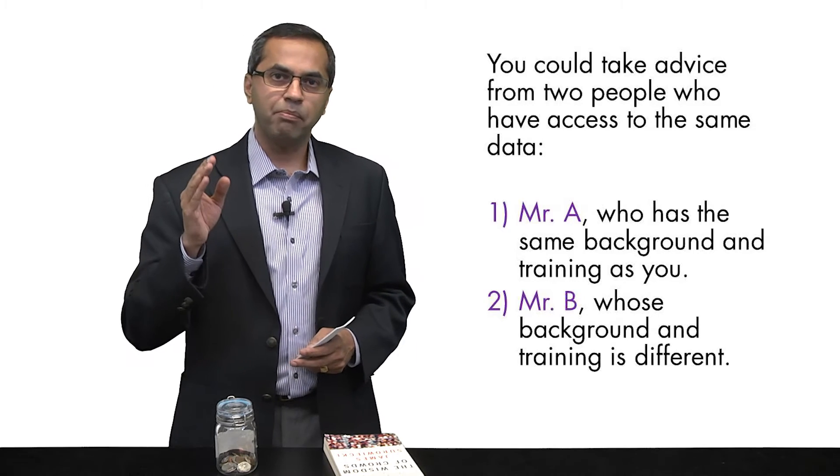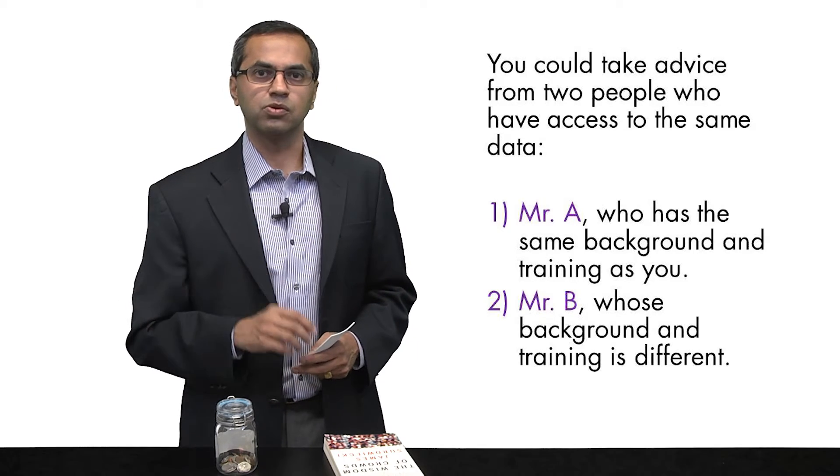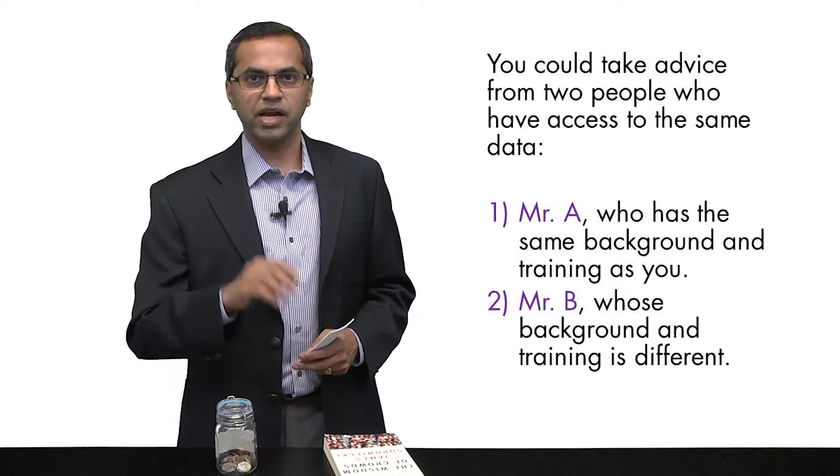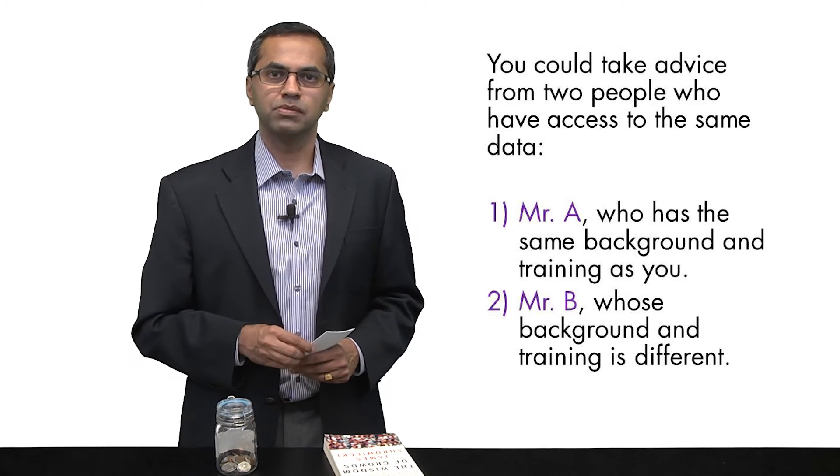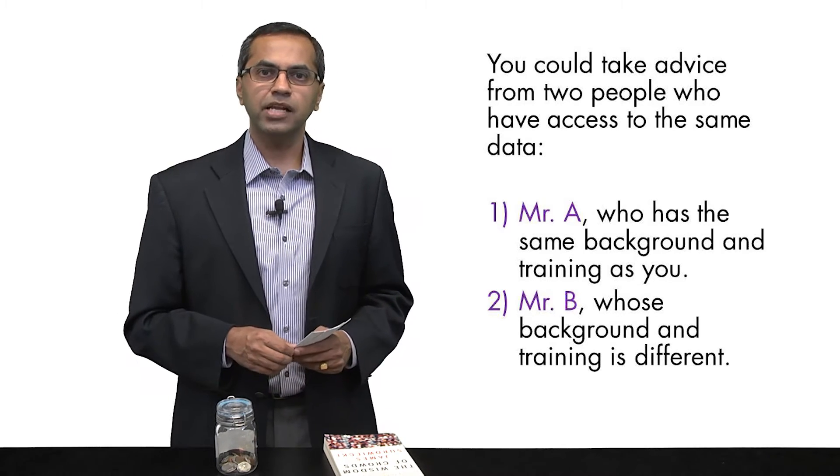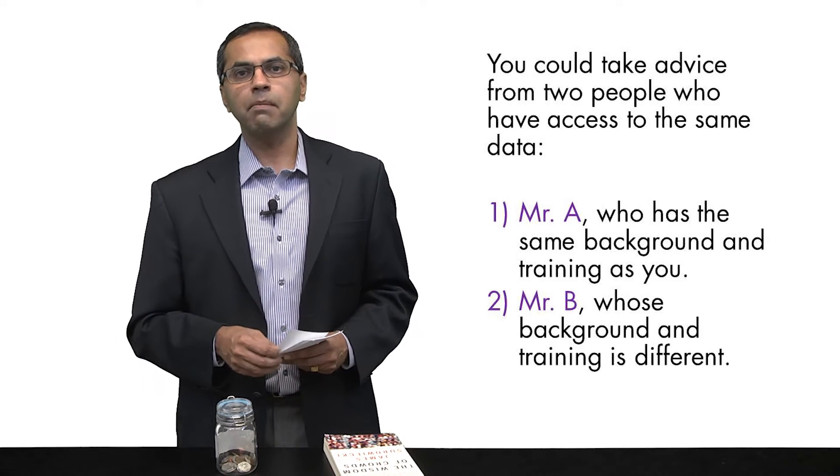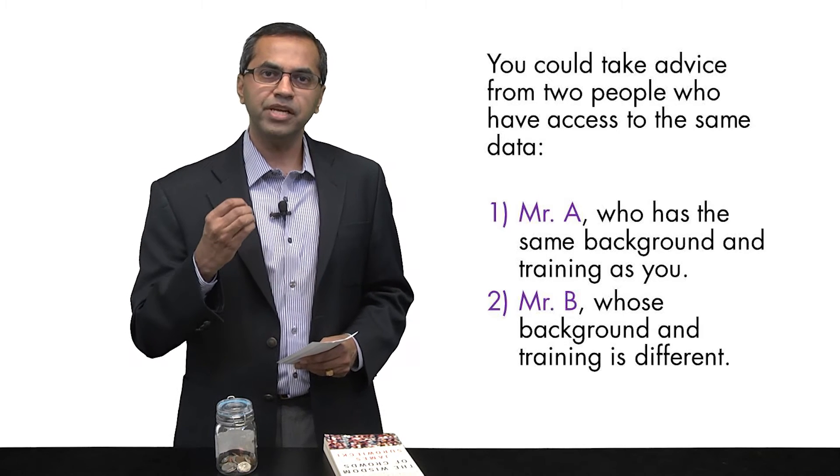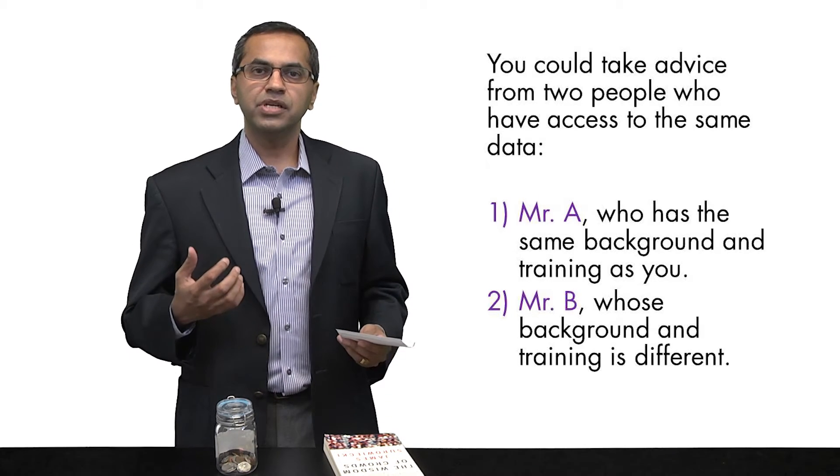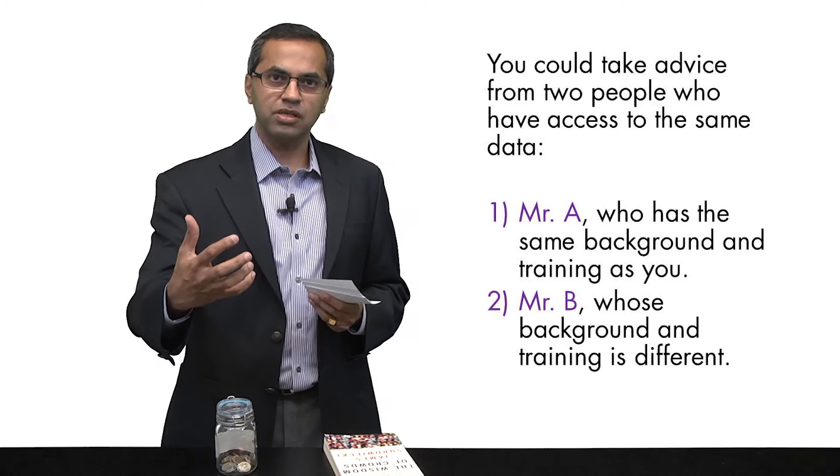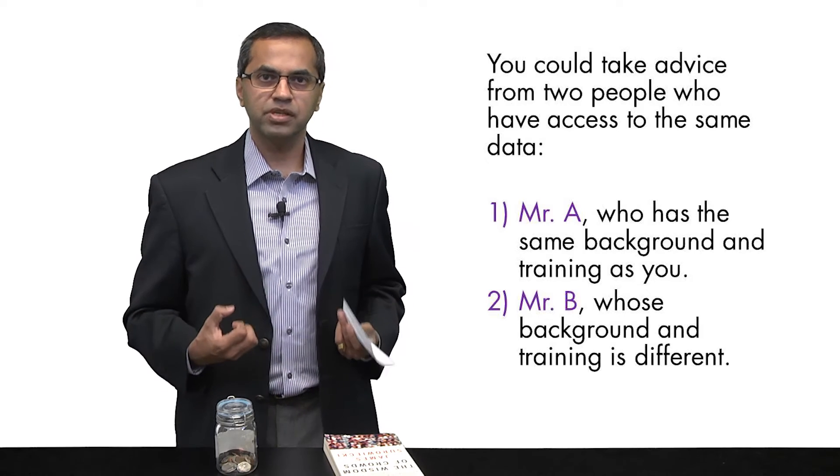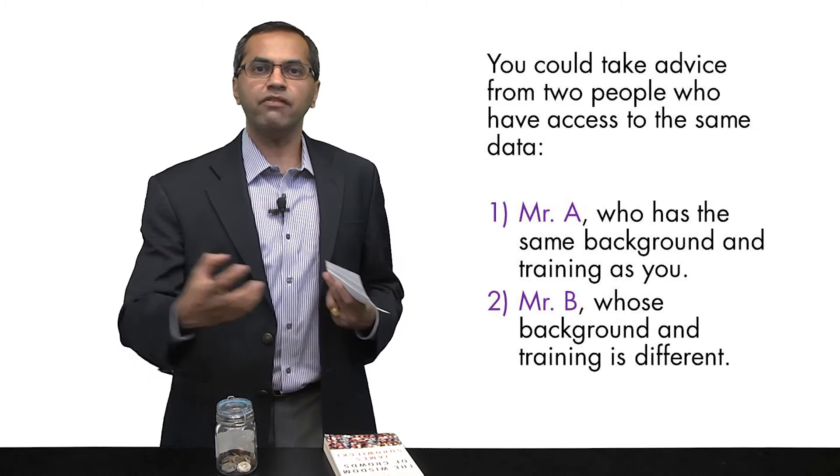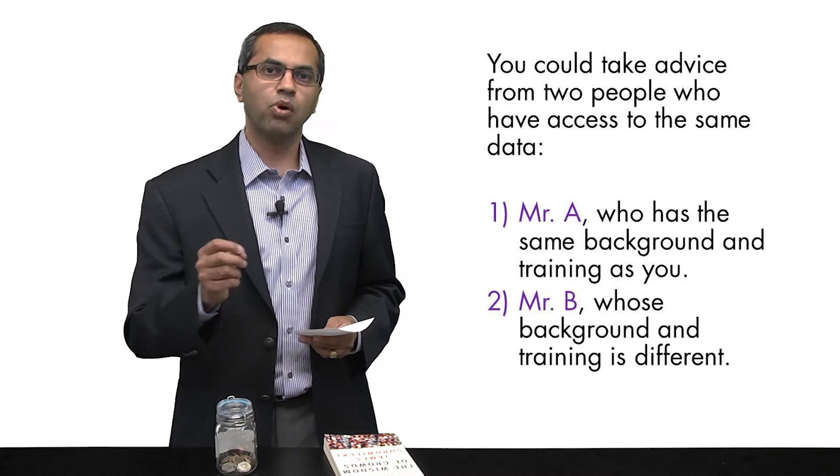Mr. A has the same background as you, the same training as you. Mr. B has a different background. Who would you go to? Now, it turns out a lot of people would tell you they would rather go to Mr. A, who has the same background as they do. But it turns out Mr. B might be a better bet. Why? Because now you and your judge bring different information to the table. And therefore, if you averaged your two judgments, you are more likely to be accurate.